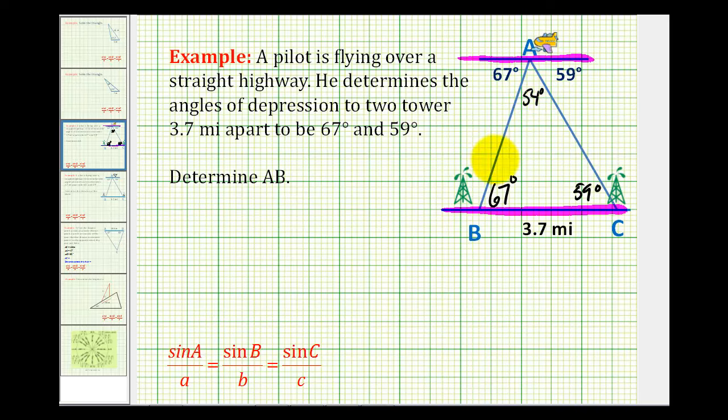So now we have the measure of all the angles in this triangle. And our goal is to determine the length of side AB, which we'll label X. Looking at the information we have in the triangle now, notice we have the measure of this angle and the length of the opposite side. And this is an indication that we can solve for X using the law of sines.